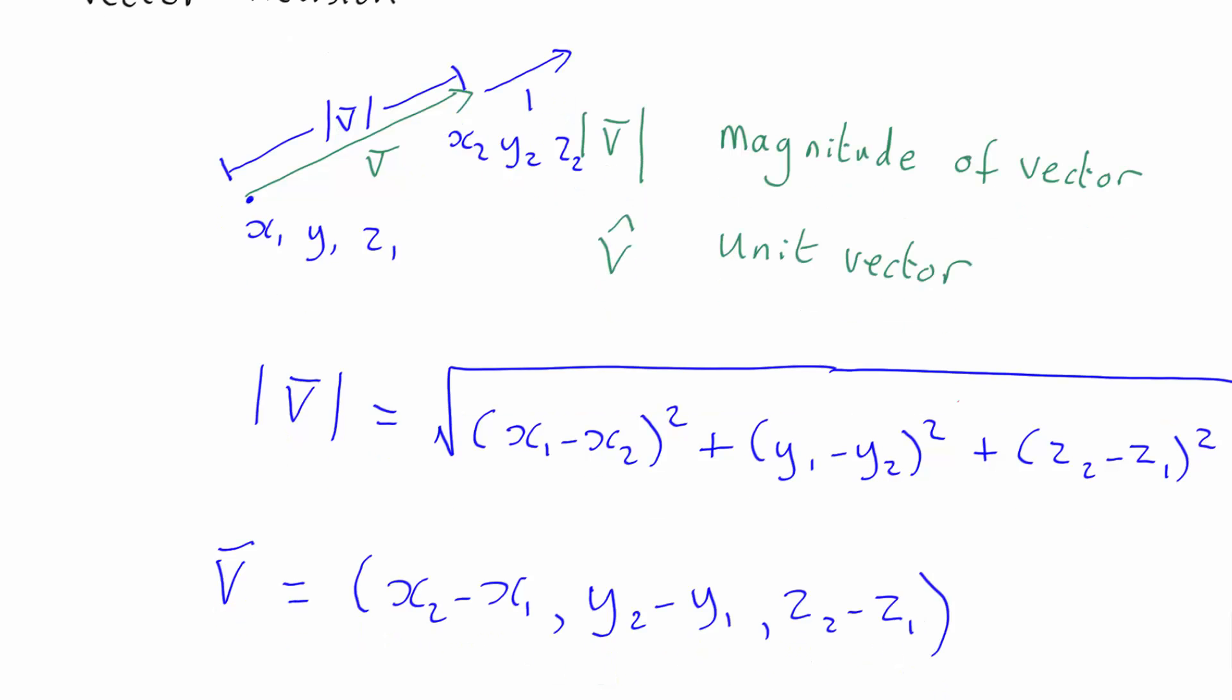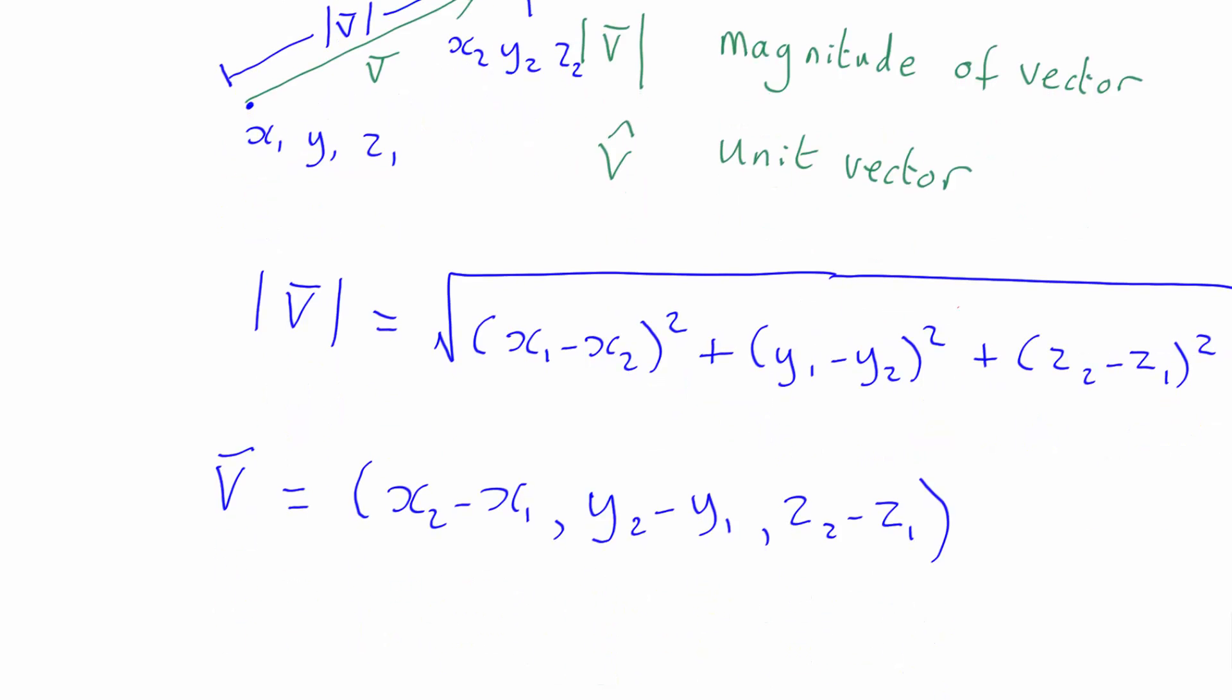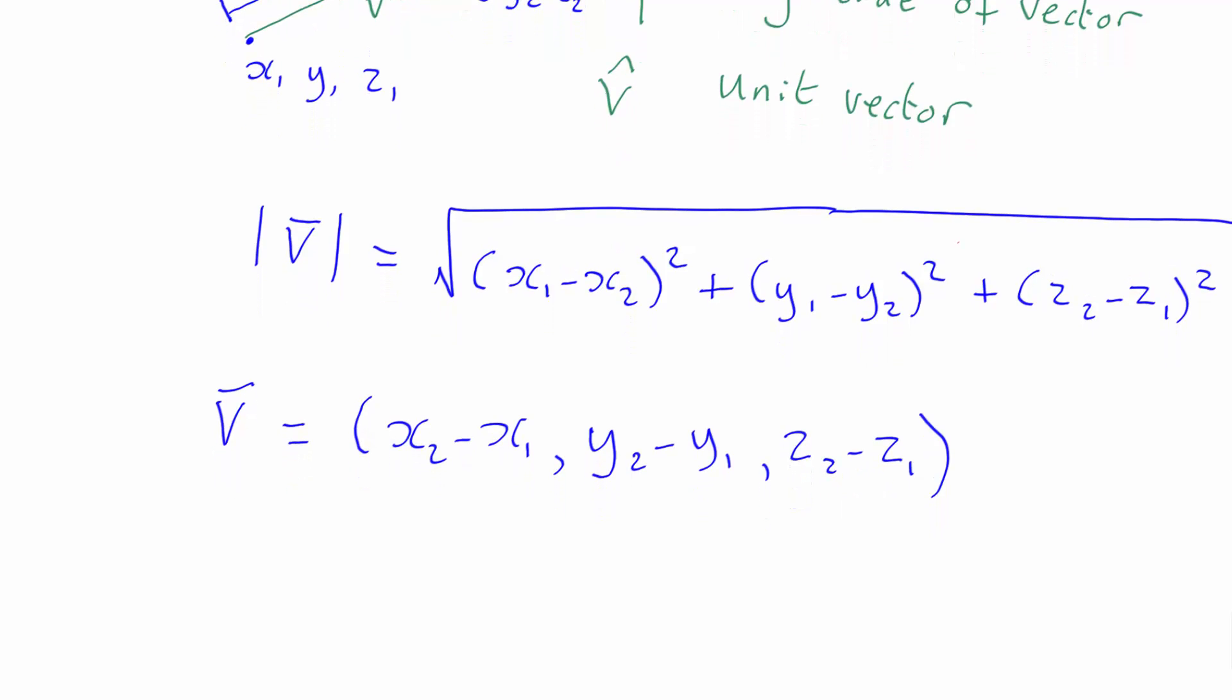Now the unit vector is going to be exactly the same but multiplied by some constant to give it a length 1. And in fact the constant is just 1 over the magnitude so v unit vector is just equal to v divided by mod v.